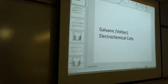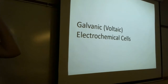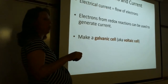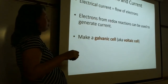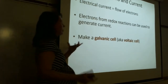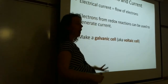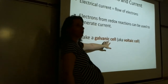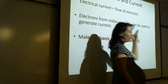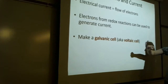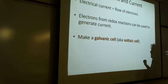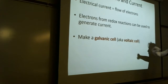Today we're talking about galvanic cells, which are also known as voltaic cells — this is a big part of where we're going with electrochemistry. We talk about current as flow of electrons, and redox reactions generate current because they can generate electrons. Galvanic cells and voltaic cells are the same thing, so know that those two words can be used interchangeably.